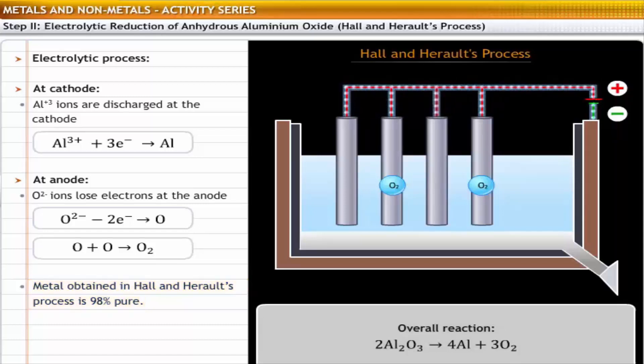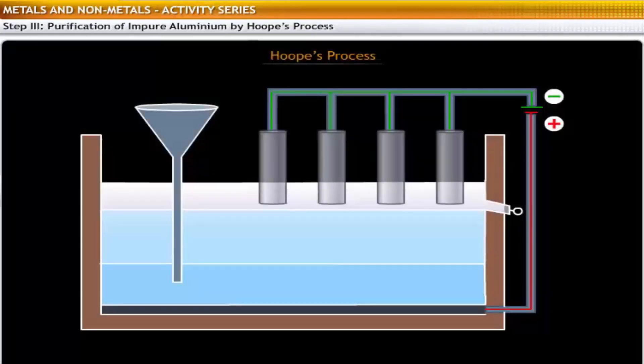The third step is the purification of the electrolyte output from Hall and Herold's process. This is done using a cell developed by Hoop; therefore, the process is called Hoop's process. Hoop's cell consists of an iron tank lined at the base with carbon.